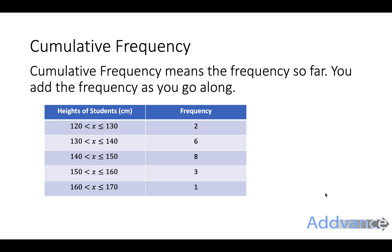Here we've got a grouped frequency table, and you can see the frequency is in groups. It says that there are two students between 120 and 130 centimetres tall, and it puts them into groups like this.